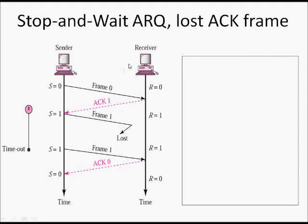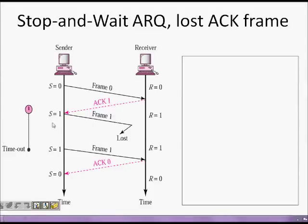In stop and wait ARQ (Automatic Repeat Request): frame zero is sent, the receiver sends ACK 1, then frame one is sent. If frame one is lost — the packet never reaches the receiver — no acknowledgement is sent. The sender's timer expires after a timeout period, and then the sender retransmits frame one. The receiver receives frame one and sends ACK 0.